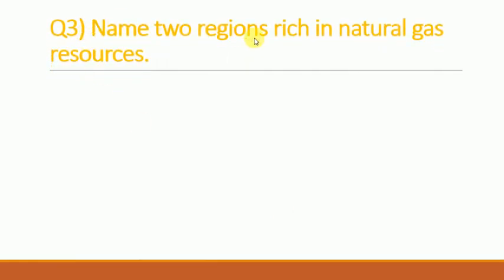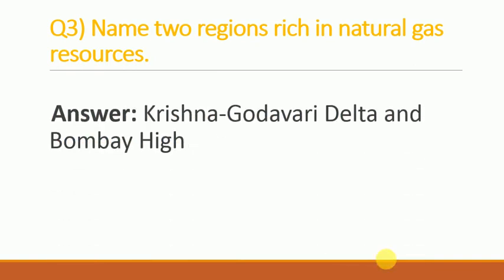Name two regions rich in natural gases. The answer is: Krishna Godavari Delta and Bombay High.